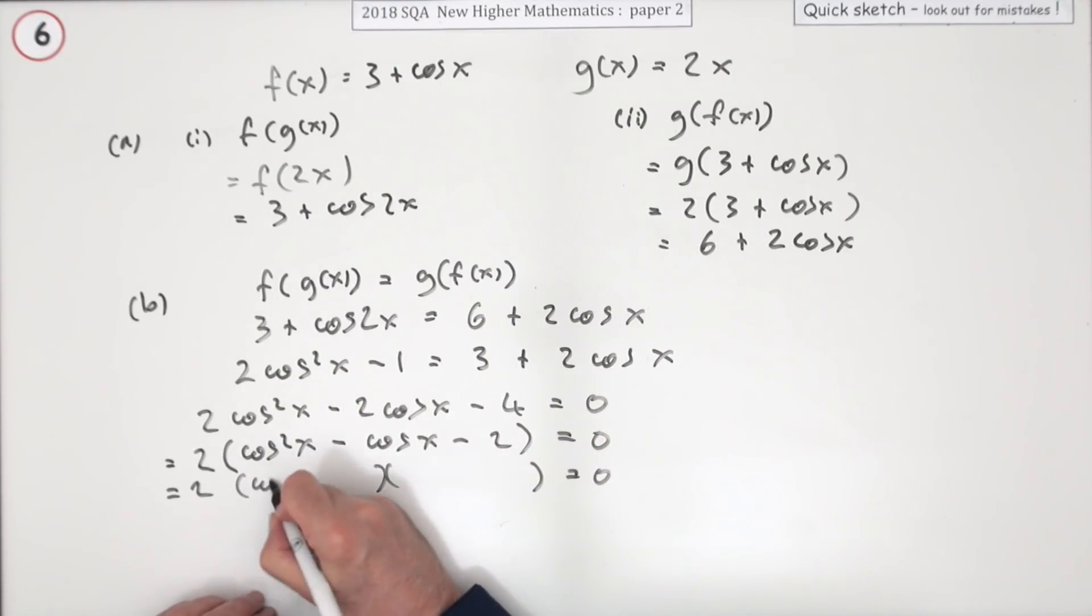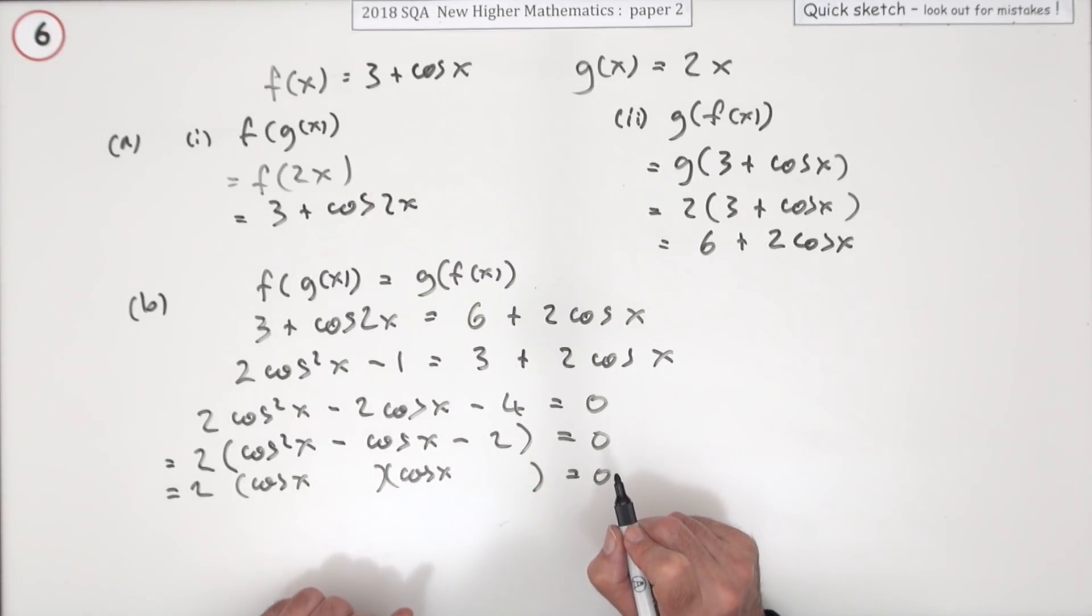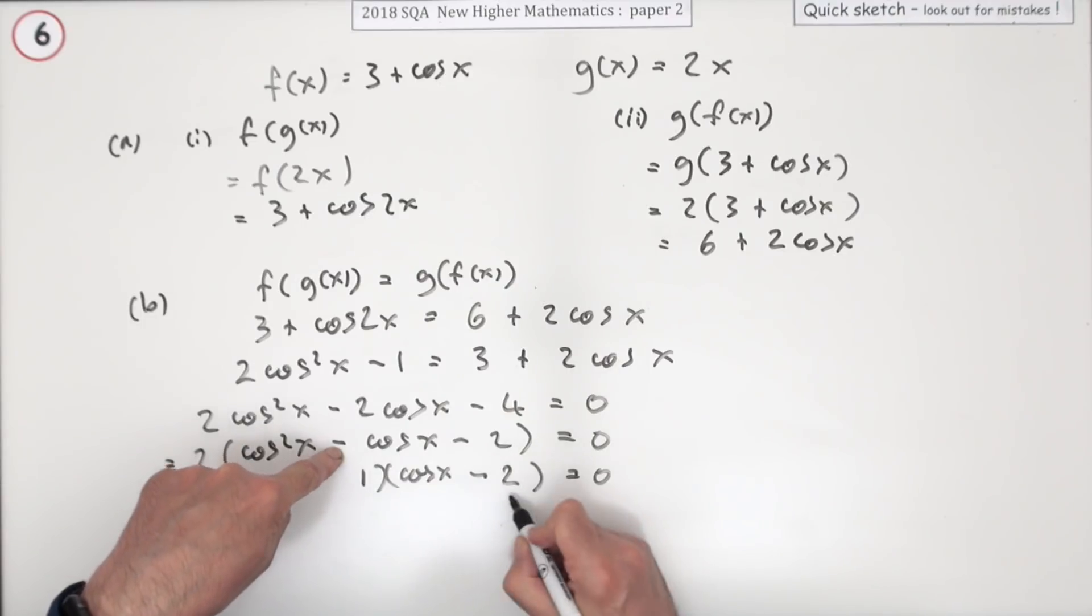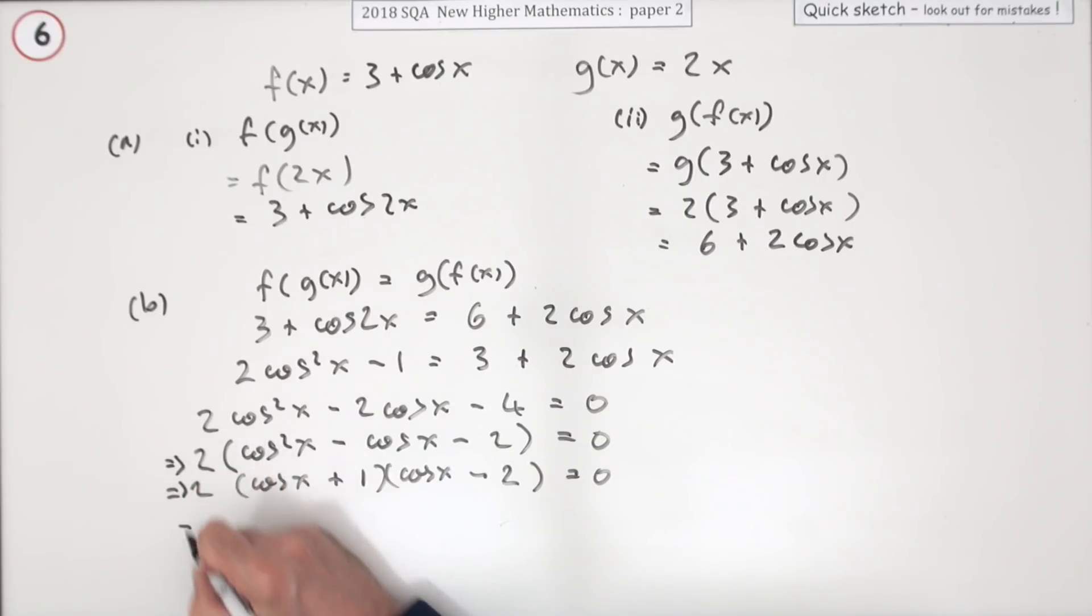Now factorize that, which is fairly trivial. It can only be cos x times cos x if it factorizes. Two can only be 1 and 2, but it does work because to make minus one in the middle it'd have to be minus the 2 plus the 1. So now I've got two solutions.